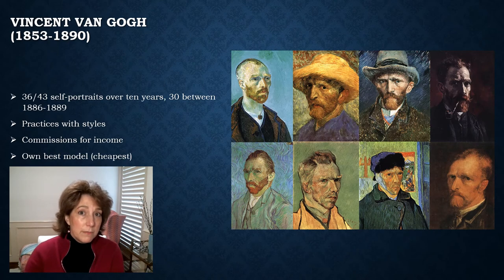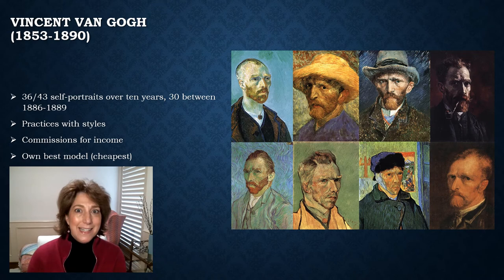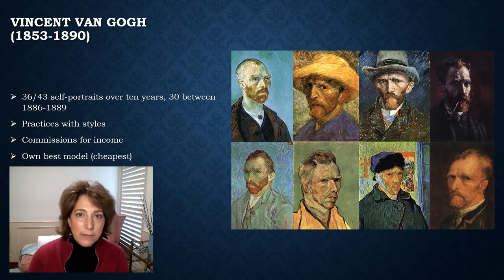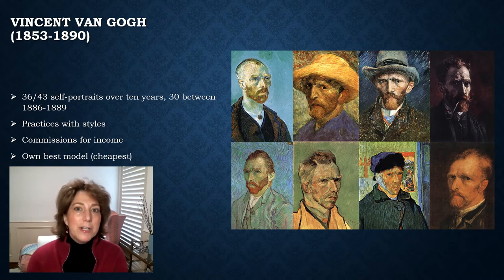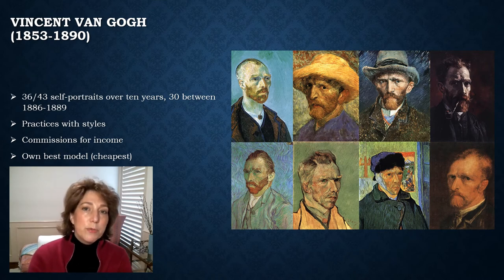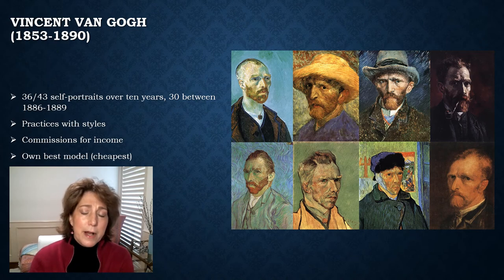Vincent van Gogh — acknowledging that's not the proper Dutch pronunciation — lived from 1853 to 1890. A fan favorite, but what a lot of people don't know is that he really didn't become an artist until the 1880s and only painted for nine years. He is Dutch, mostly self-trained, and very close with his brother Theo. Van Gogh had gone to Paris to live with Theo, who was an art dealer; Vincent was a starving artist who had failed at every possible career he'd tried before.